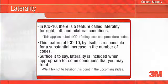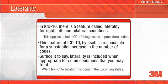In the upcoming slides, we'll take a look at some diseases and procedures that have new documentation requirements under ICD-10. ICD-10 provides a feature called Laterality, for right, left, and bilateral, which is found in many diagnoses and procedure codes involving paired organs or those codes specific to one side of the body versus the other. For example, acute left otitis media. ICD-9 has a limited number of these; ICD-10 has many more. This feature of ICD-10 by itself is responsible for a substantial increase in the number of codes, which you have probably heard so much about.